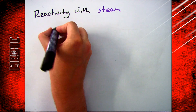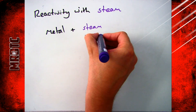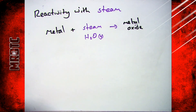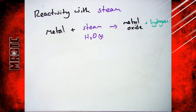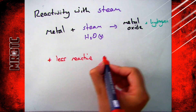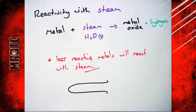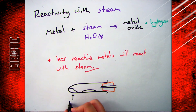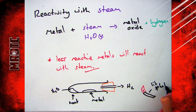If we heat the water up and turn it into steam — H₂O as a gas — you get something slightly different. This time you get an oxide, not a hydroxide. For example magnesium will give you magnesium oxide. You still get hydrogen gas, but less reactive metals like magnesium will now react. You can prove this using a boiling tube with metal inside and heating mineral wool soaked in water — use your lit splint and you get your squeaky pop.